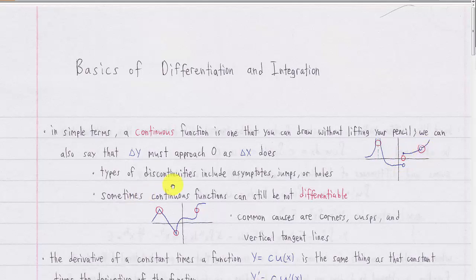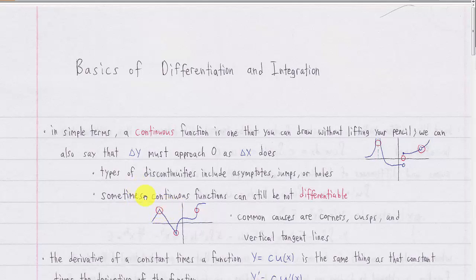Even if a function is continuous, it can still be not differentiable at some point. For example, these three points — this is called a corner, this is a cusp, and this is a vertical tangent line. Any sharp points are not going to be differentiable because if you try to draw a tangent line at a sharp point, you could draw infinitely many different tangent lines. Because it's not a unique tangent line to the curve at this point, it's not differentiable.